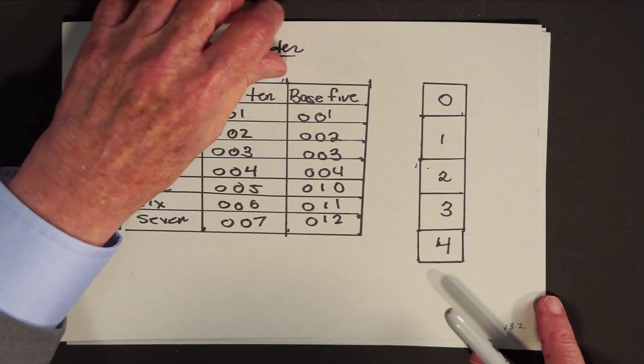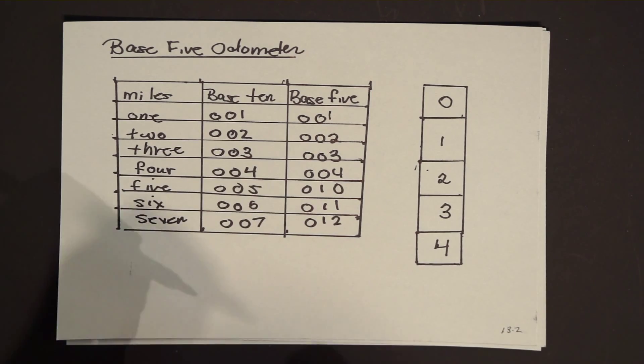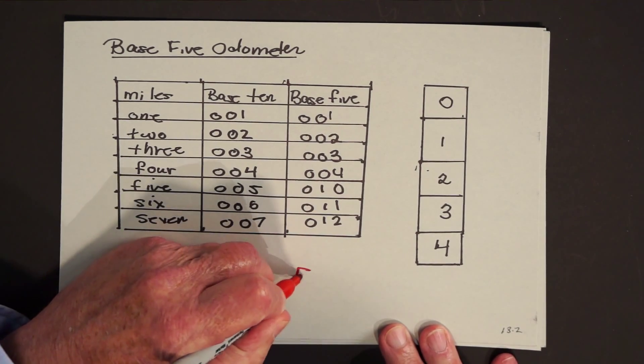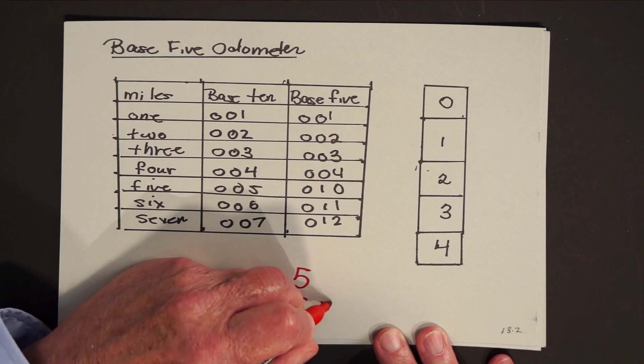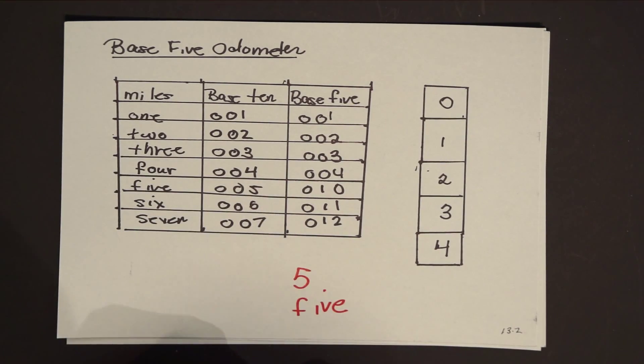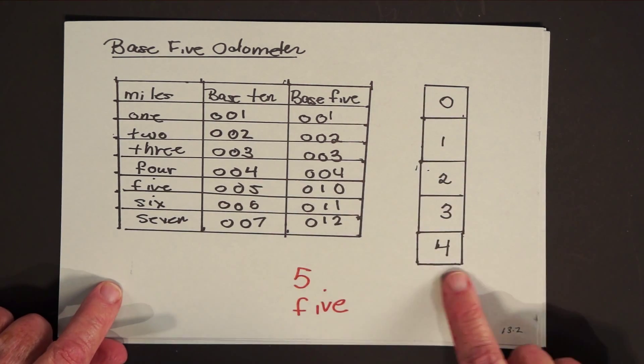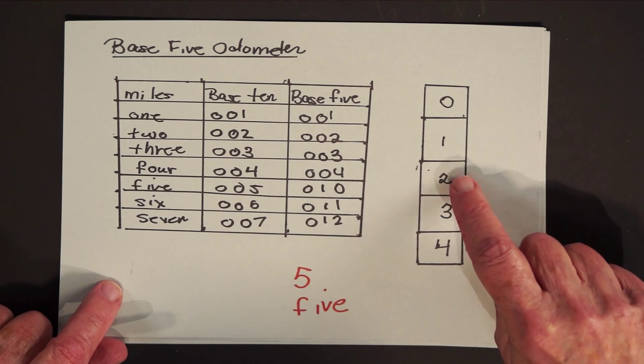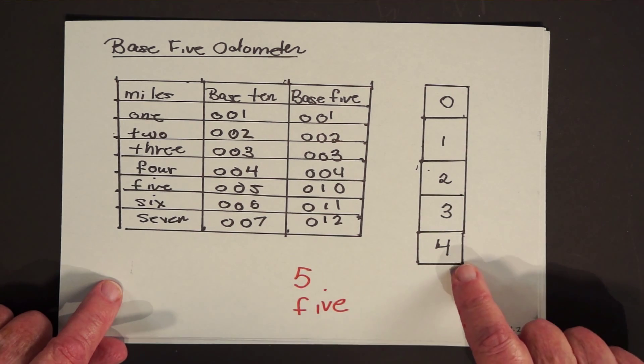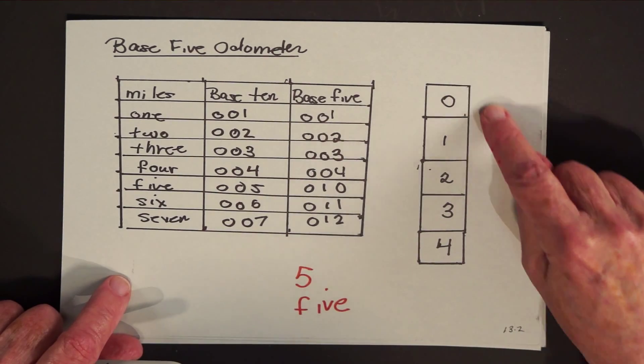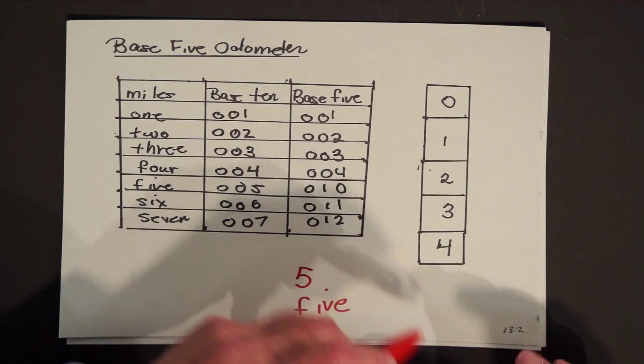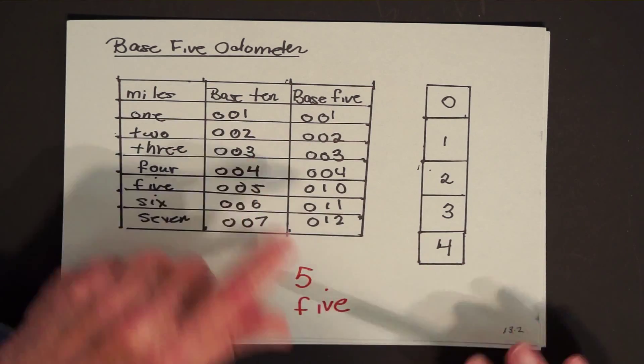I thought that a nice way to introduce that would be in terms of the odometer. The reason I say that is students sometimes have trouble because they confuse the numeral five with the number five. So what happens is I want people to be able to see that on the base 5 odometer you only see zero, one, two, three, and four. Because the next gear that comes up is the zero. And every time the zero comes up it clicks the next gear by one.